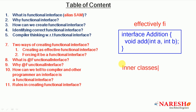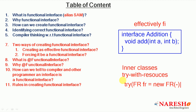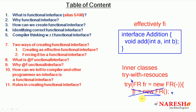If you remember in inner classes and try-with-resources concepts, we had to make a variable final or effectively final. For example, inside a try block, if you assign a new value to the file reader variable 'fr', then it is not a final variable and the compiler will throw an error. Either declare it as final, or make it effectively final by not assigning any new value. That same concept applies to functional interfaces as well.